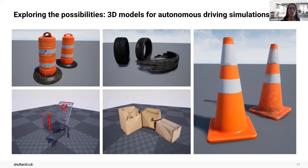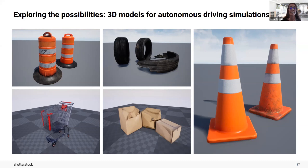To do this, they use 3D models. 3D models can be used to train computer vision models even more precisely for things like gauging distances or other spatial dynamics when driving at different speeds — for example, training a self-driving car to avoid random objects like a cardboard box, a tire, or a shopping cart, or training models to recognize different objects that signal road work or any other issue that could appear in the road.